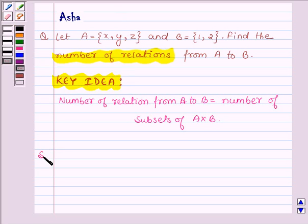Let us now start with the solution. And here we are given a set A having elements X, Y and Z and the set B having elements 1 and 2.